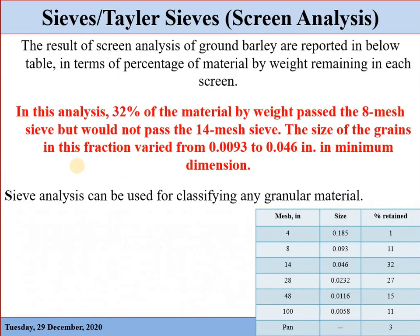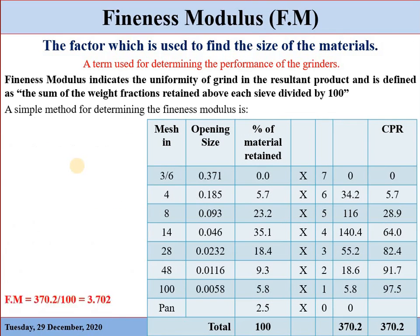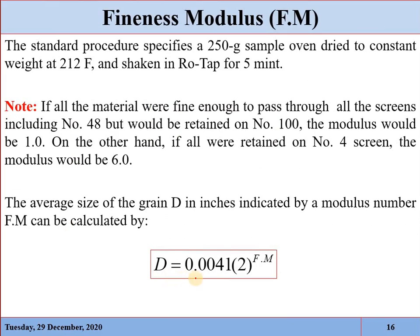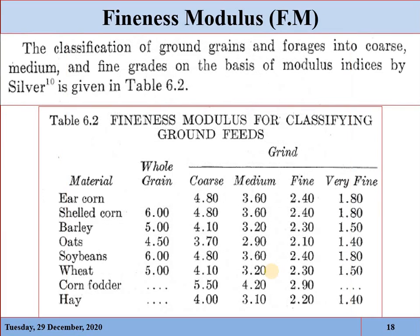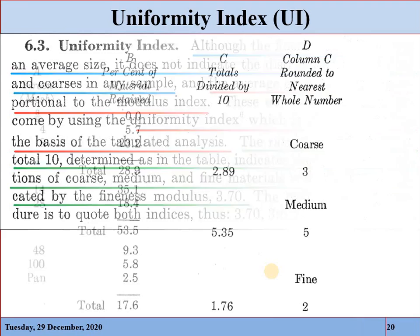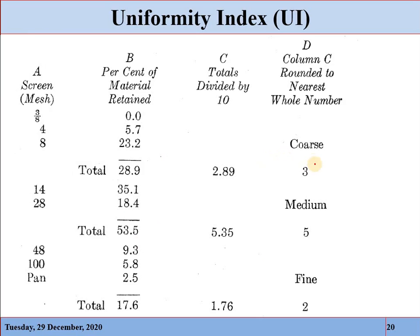After the sieve analysis, we are able to find the fineness modulus of the reduced product. With the help of the fineness modulus, we can find the average size of the product, which is 0.0041 multiplied by 2 to the power of the fineness modulus. This gives us only the average size of the grains. We also have the uniformity index to find out the percentage size variation — for example, 30% coarse, 50% medium, and 20% fine.